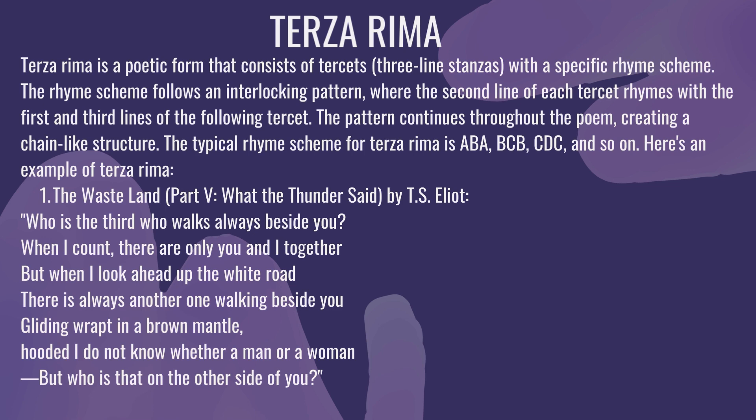The rhyming scheme follows an interlocking pattern where the second line of each tercet rhymes with the first and third lines of the following tercet. This is the basic pattern of Terza Rima.